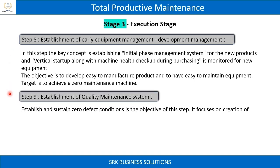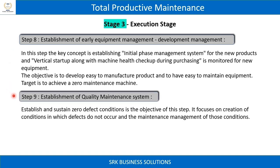Step 9: Establishment of quality maintenance system. The objective is to establish and sustain zero-defect conditions. This step focuses on creation of conditions in which defects do not occur, and the maintenance management of those conditions.